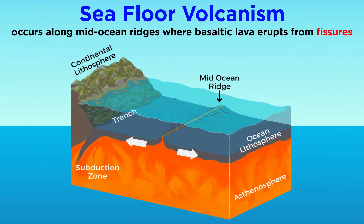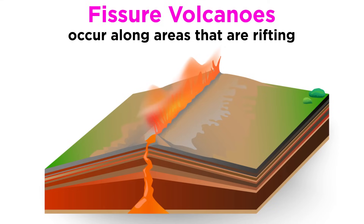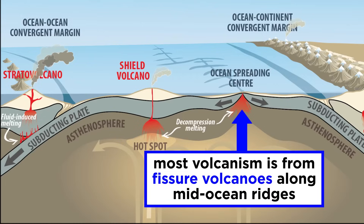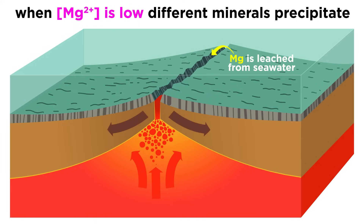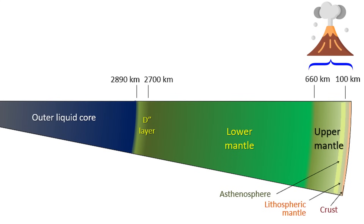Seafloor volcanism occurs along mid-ocean ridges where basaltic lava erupts from large linear volcanoes or fissures. Fissure volcanoes also occur along areas that are rifting, such as Iceland and East Africa. The vast majority of the lava that has erupted on Earth over its history has come from fissure volcanoes along mid-ocean ridges. The intensity of seafloor volcanism also has a large impact on ocean chemistry, due to hydrothermal circulation along the ridge leaching magnesium from seawater, which during times of rapid seafloor spreading even affects the ability of marine organisms to build their shells.